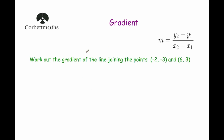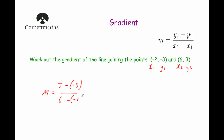Our next question says: work out the gradient of the line joining the points (−2, −3) and (6, 3). This question includes some negative signs in the coordinates. We label this point x1, y1 and this point x2, y2. So m equals y2 minus y1 over x2 minus x1, which is 3 minus (−3) over 6 minus (−2). That gives us 6 over 8, which simplifies to 3 quarters. So the gradient of this line is 3/4.